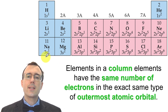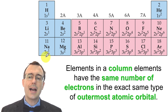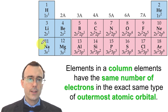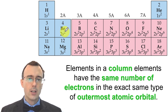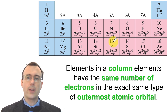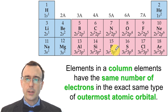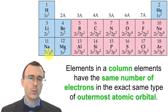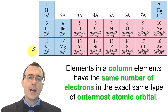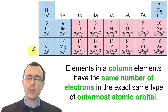In addition to periods and sections, there's a lot of useful information in the columns. Every column of elements has the same number of electrons in exactly the same type of outermost atomic orbital. For example, this column ends in s1, s1, s1 — the whole column ends in s1. This column ends in s2, s2. And this column ends in p3, p3. As you go down in periods, the principal quantum number increases: 1s1, 2s1, 3s1 — and that 1, 2, 3 corresponds to the row or period number. We can use this to predict the outermost part of any electron configuration of any atom on the periodic table.